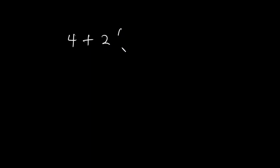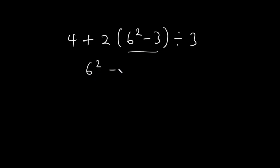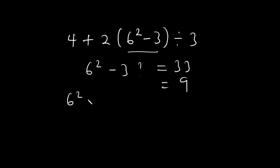Now let's solve the answer for 4 plus 2, brackets open, 6 squared minus 3, brackets close, divided by 3. According to BODMAS, we need to solve what is in the bracket first: 6 squared minus 3. Is it equal to 33 or equal to 9? Order comes before subtraction — under Order we have powers or exponents and then square roots. So 6 squared minus 3 is equal to 36 minus 3, which is equal to 33.